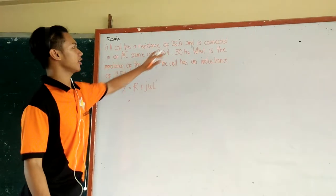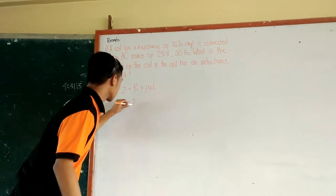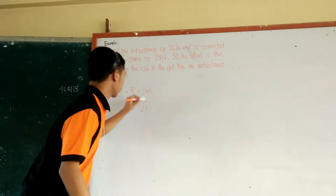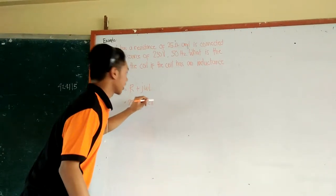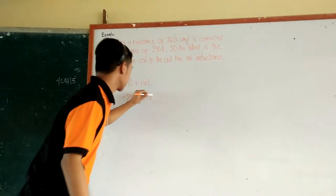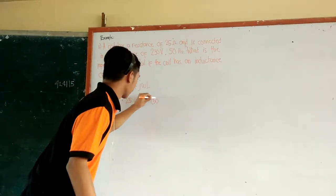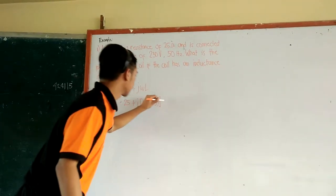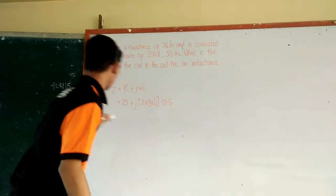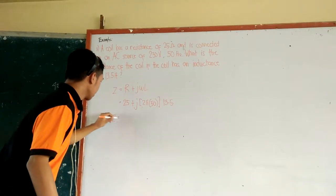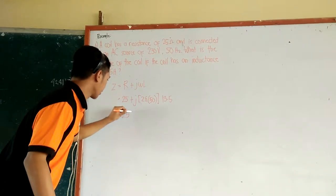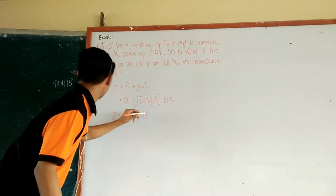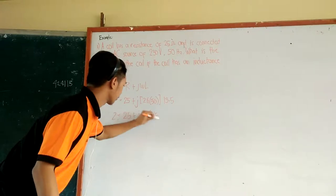We have the given resistance of 25 ohms, plus the imaginary term. The formula for omega is 2πF, and the frequency is 50 hertz, then the inductance is 13.5 Henry. So our impedance is 25 plus j424.15.